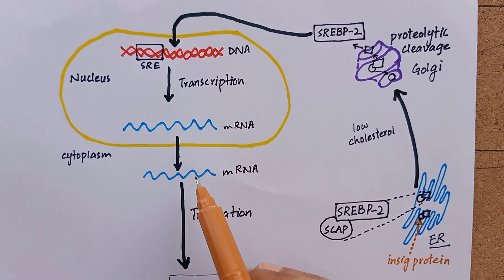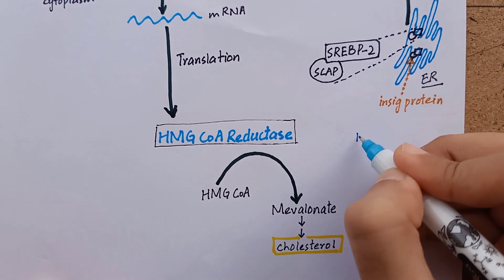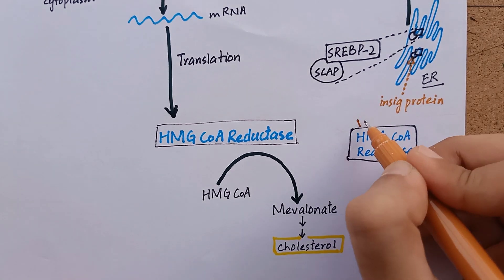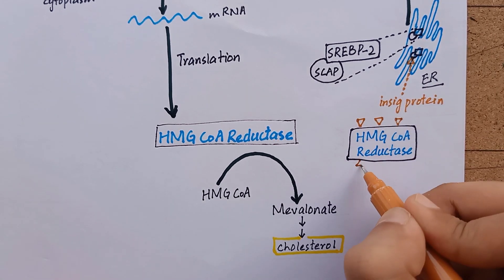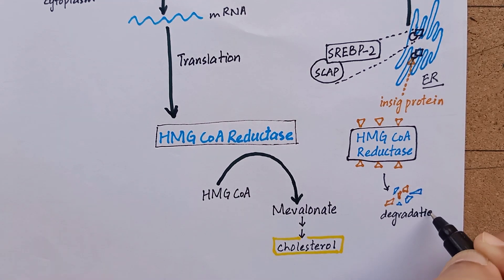thus preventing the activation of SREBP2 and leading to down-regulation of cholesterol synthesis. When cholesterol levels in the cell are high, the INSIG protein also binds to HMG-CoA reductase leading to its degradation and further down-regulating cholesterol synthesis.